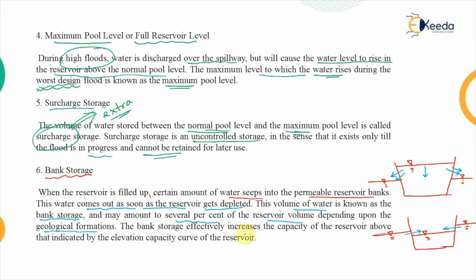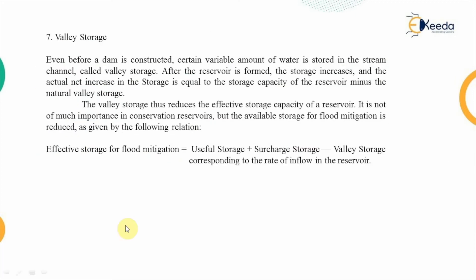The volume of water seeping into the banks is known as bank storage, and it may amount to several percent of the reservoir volume depending on the availability of fissures or cracks — that is, the geological formations of the area. The advantage of bank storage is that it effectively increases the capacity of the reservoir above that indicated by the elevation-capacity curve, since it is additional storage not accounted for in the design.